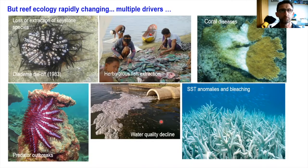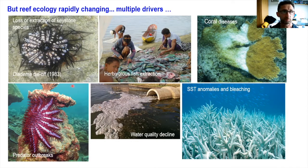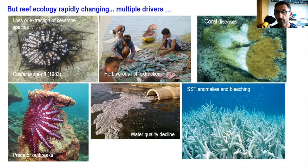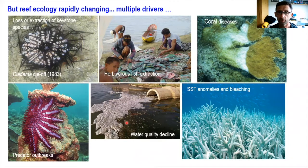Reef ecology and the processes associated with carbonate production are changing very rapidly. Over the last three to five decades the spatial footprint of ecological change on reefs has been increasing. Some of that has been driven by the loss or extraction of keystone species — diseases that affected Diadema populations in the Caribbean are a good example. Increasingly heavy extraction of herbivorous fish plays a key role in regulating reef health. Other factors include coral diseases very prevalent in the Caribbean, predator outbreaks such as crown-of-thorns starfish, broad regional declines in water quality and eutrophication, and the growing threat from sea surface temperature anomaly events and coral bleaching.